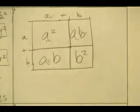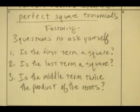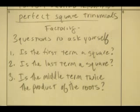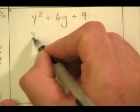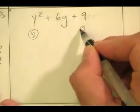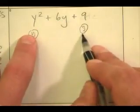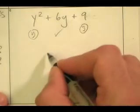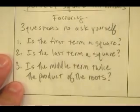To identify perfect square trinomials, ask three questions: one, is the first term a perfect square? Two, is the last term a perfect square? Three, is the middle term twice the product of those square roots? For example, y² plus 6y plus 9: is y² a square? Yes, root is y. Is 9 a square? Yes, root is 3. Is 6y twice the product of y and 3? Three times y is 3y; twice that is 6y. Yes — it's a perfect square trinomial, equal to (y+3)².